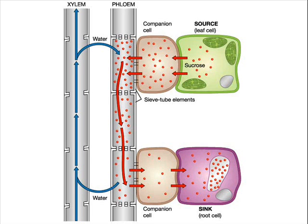Sucrose entering the sieve tube element reduces the water potential inside the sieve tube. As a result, water molecules move into the sieve tube element by osmosis from surrounding tissues. This increases the hydrostatic pressure in the sieve tube at the source.